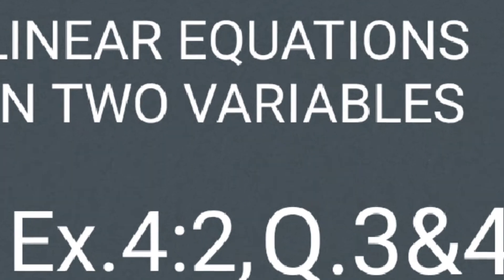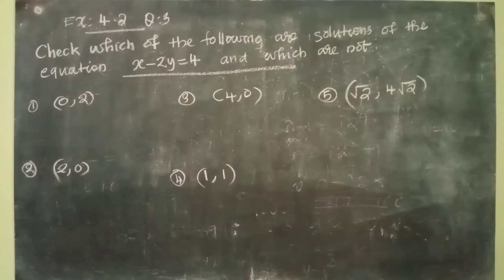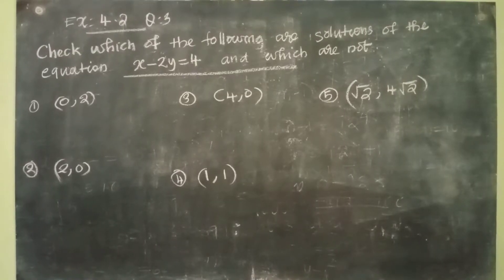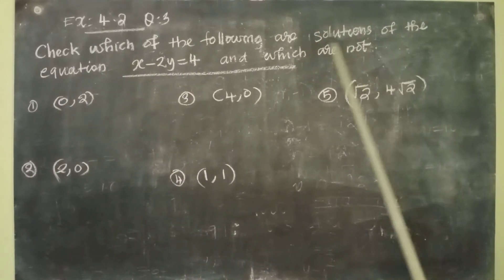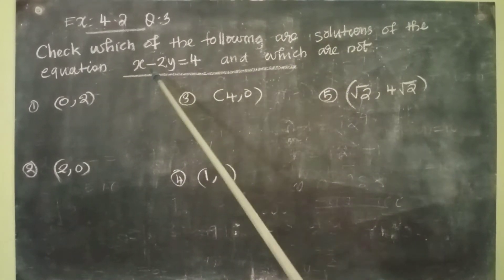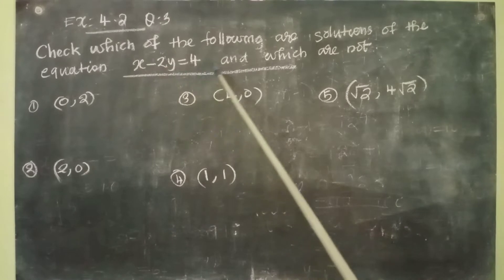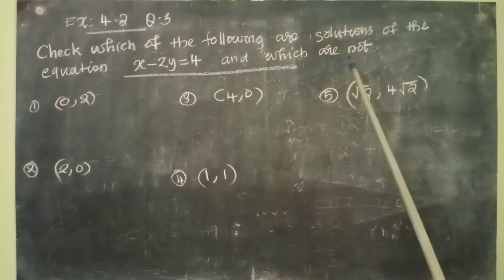Dear students, welcome to Blackboard. In this video we are going to discuss exercise 4.2, question number 3 and 4. Question number 3: check which of the following are solutions of the equation x minus 2y equal to 4 and which are not.